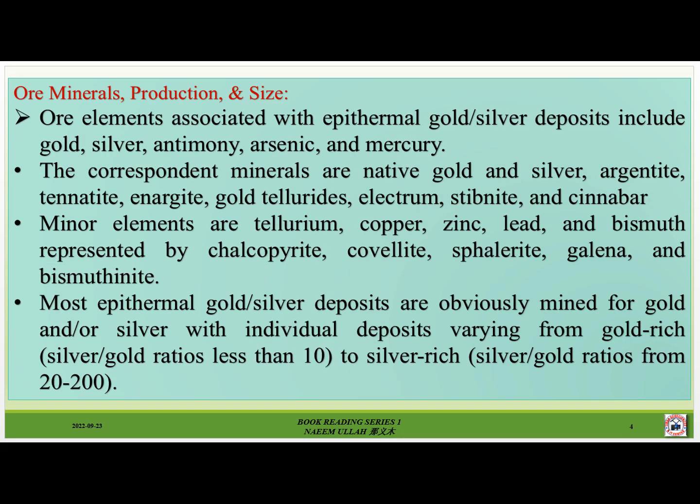Ore minerals, production and size. Elements associated with epithermal gold-silver deposits include gold, silver, manganese, arsenic and mercury. The corresponding minerals are native gold and silver, argentite, tenorite, acanthite, gold tellurides, electrum, stephanite, and cinnabar. Minor elements are tellurium, copper, zinc, lead and bismuth, represented by chalcopyrite, stibnite, sphalerite, galena and bismuthinite. Most epithermal gold-silver deposits are mined for gold and/or silver, with individual deposits ranging from gold-rich (silver-to-gold ratios less than 10) to silver-rich (silver-to-gold ratios from 20 to 200).